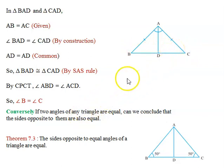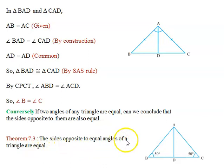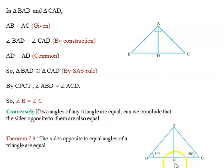Conversely, what is the converse? The converse means the reverse. If any two angles of a triangle are equal, then the sides opposite to those equal angles are also equal. That is Theorem 7.3 — the reverse of Theorem 7.2. It states: the sides opposite to equal angles of a triangle are equal. The proof is not given, but it is very simple, and it follows the same approach as Theorem 7.2.